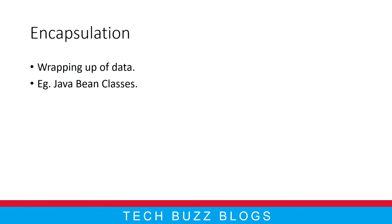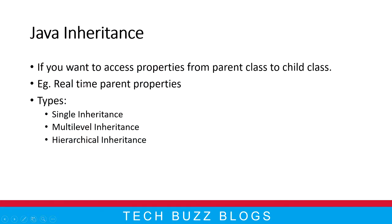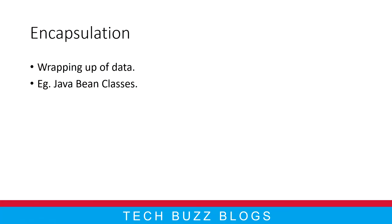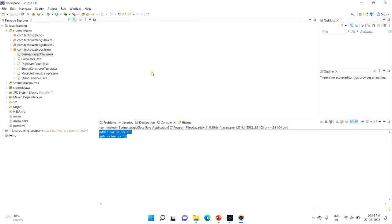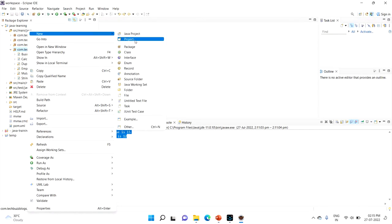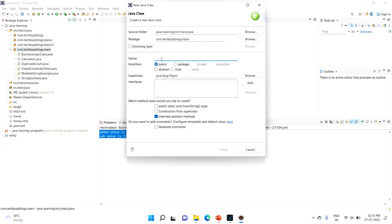Let me show you a real-time example using a Java bean class, also called a POJO class. I'll show you how to create it and how encapsulation works in practice. Let me jump into Eclipse. I'm going to create one class called EncapsulationExample.